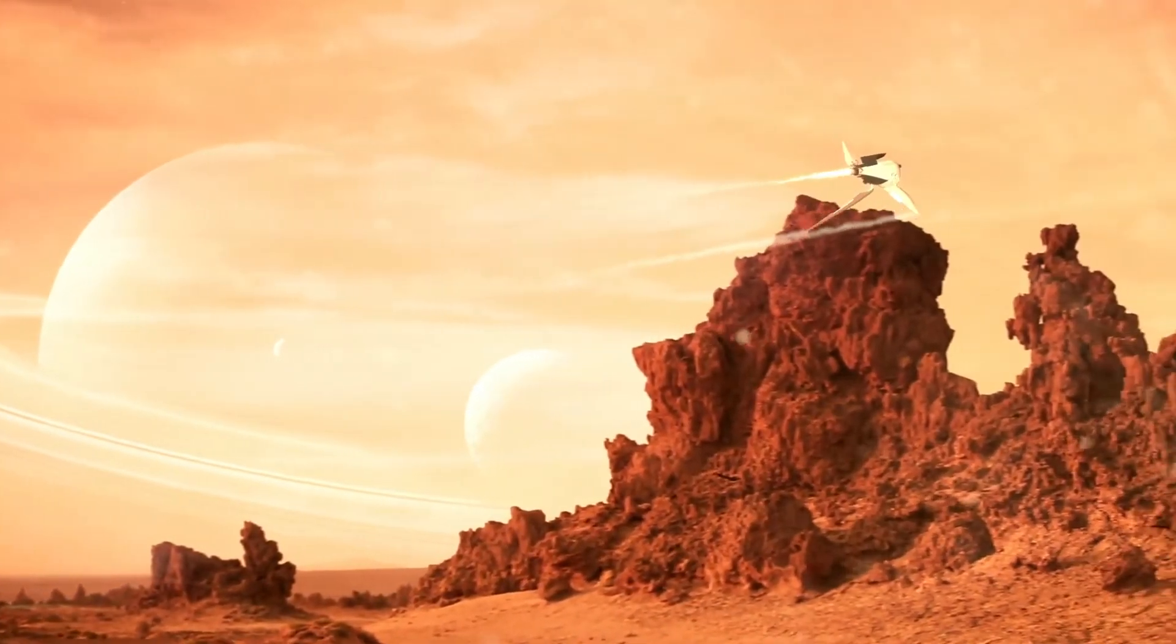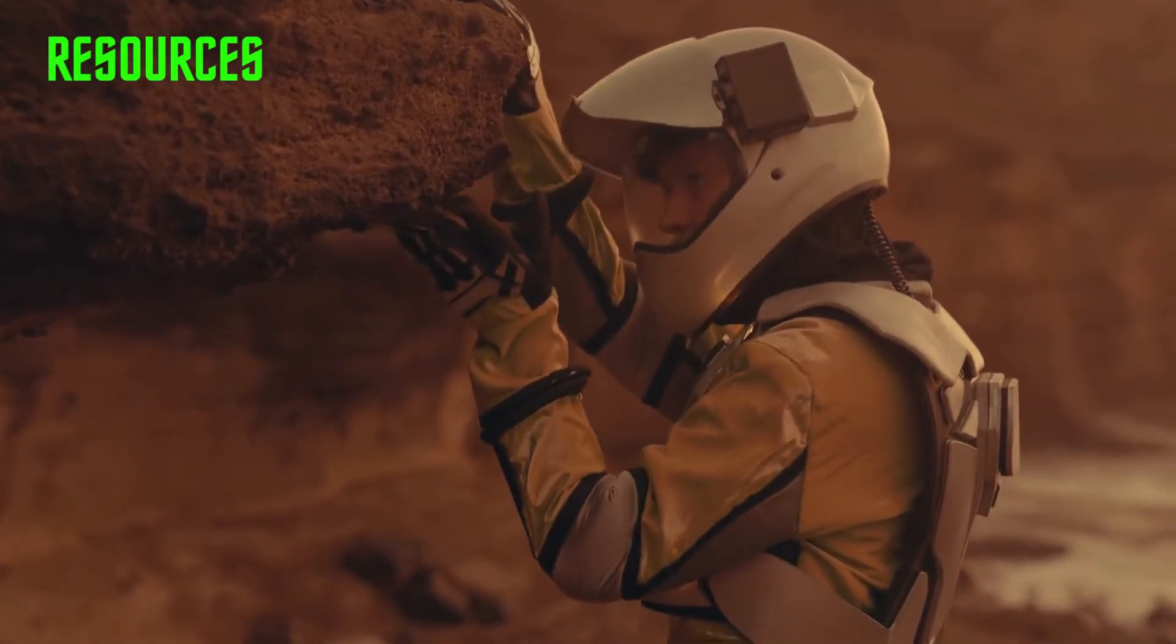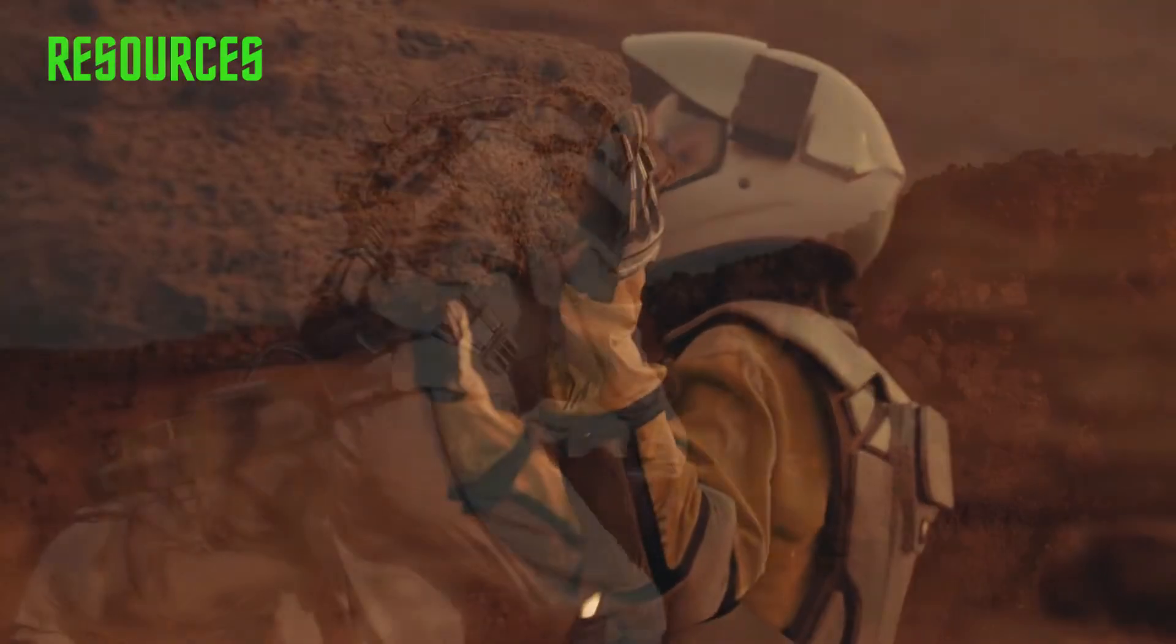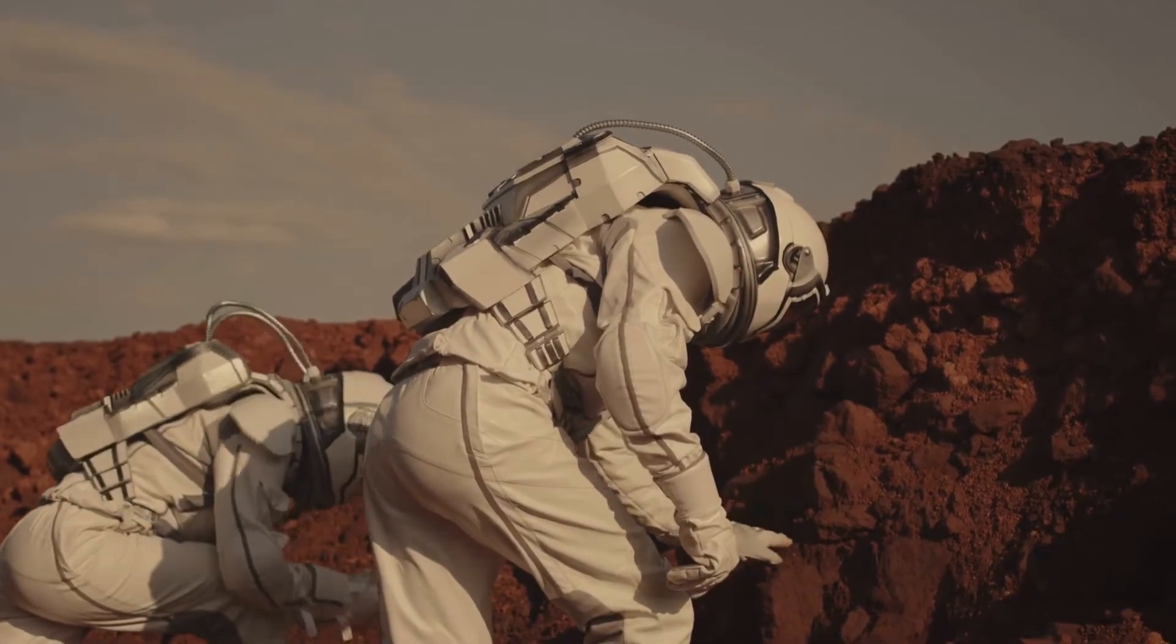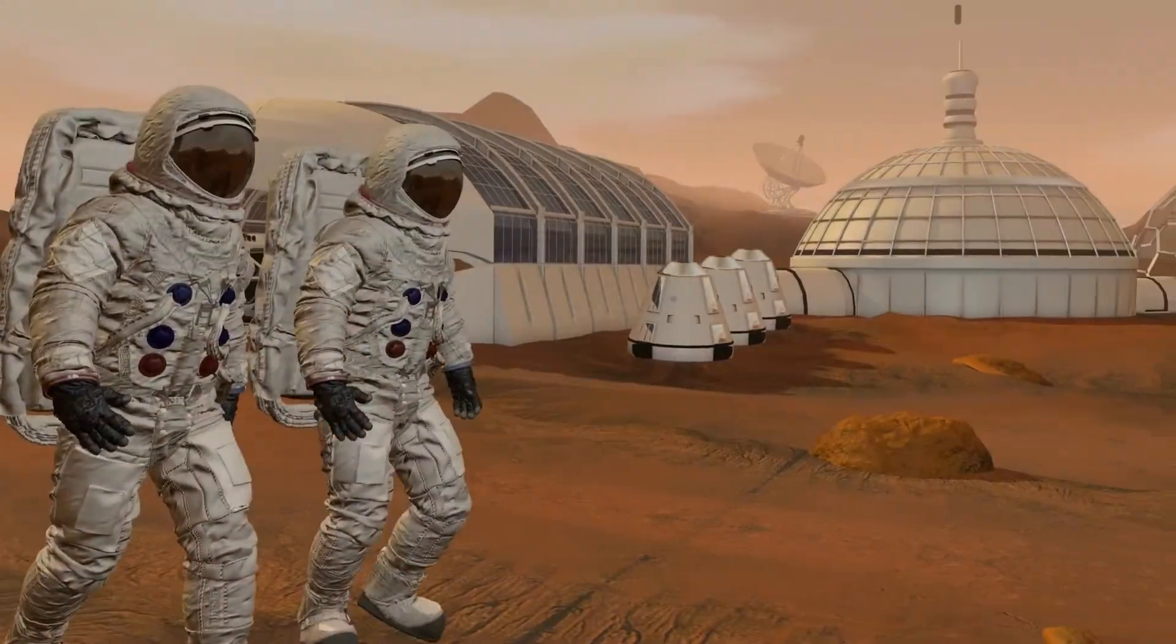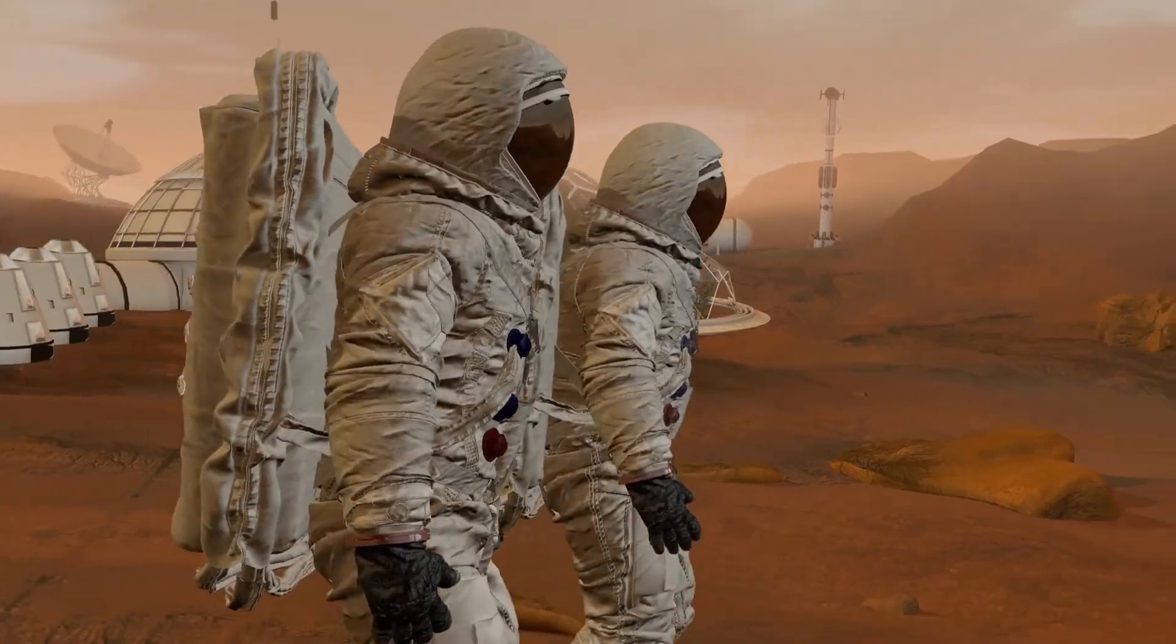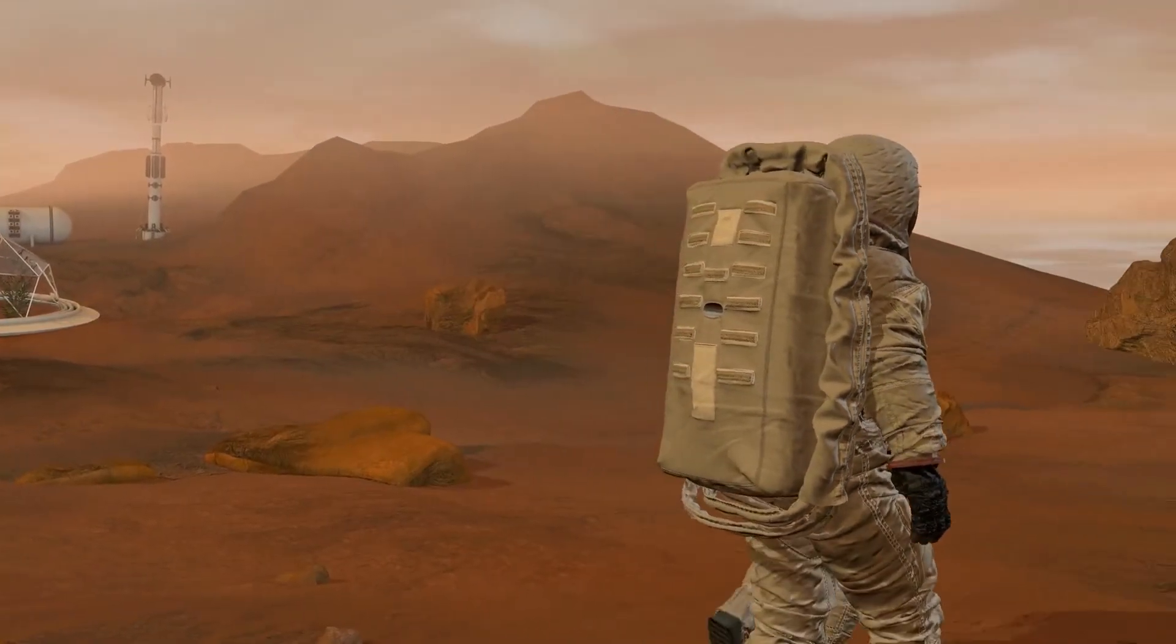Mars is rich in resources that can be utilized by a colony to sustain itself. Water ice present in the Martian soil can be extracted, purified, and used for drinking, agriculture, and the production of rocket fuel. Martian soil, known as regolith, contains minerals that can be processed to obtain building materials, fertilizers, and other essentials for a growing colony. Establishing a colony on Mars would provide a crucial backup for the survival of humanity.